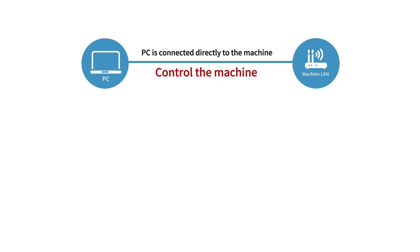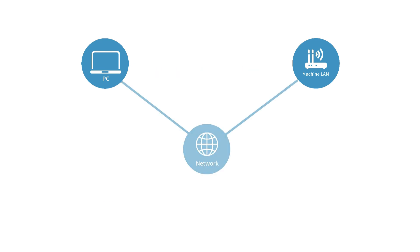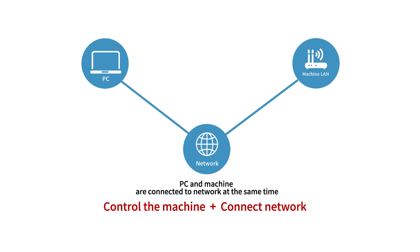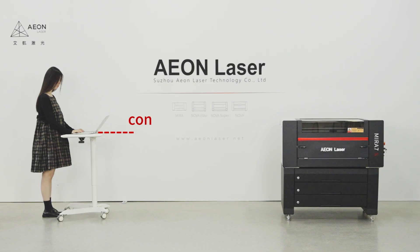There are two ways to connect your PC to the machine. The first way is to connect your PC directly to the machine. The second way is to connect your PC and machine to the network at the same time. Let me show you the first way.